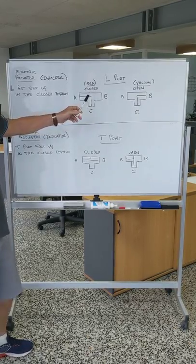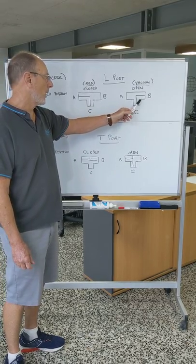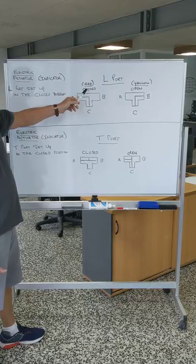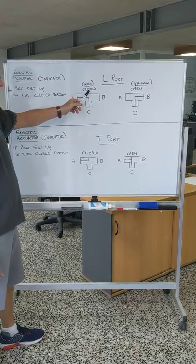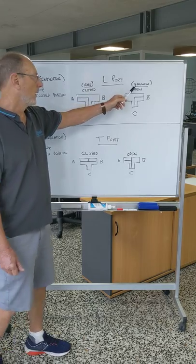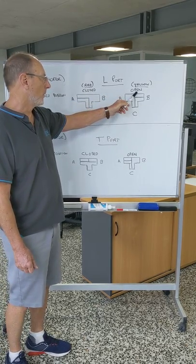In the L-port, the open position connects port C and B. The setup includes an indicator where red is closed and yellow is open.